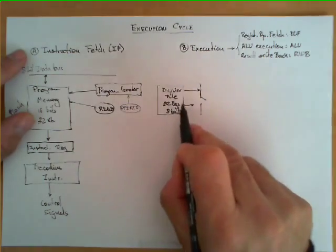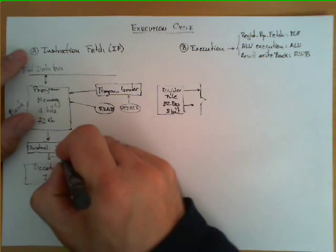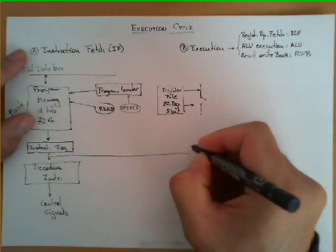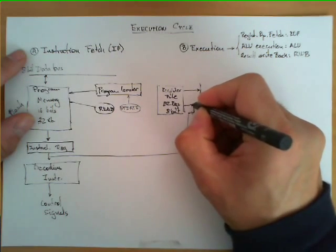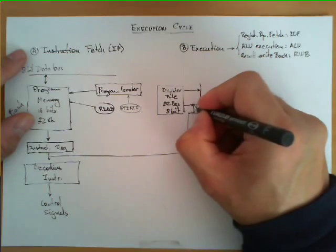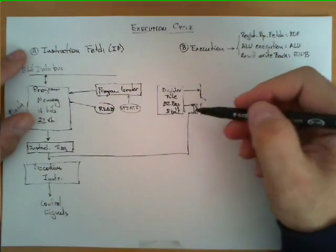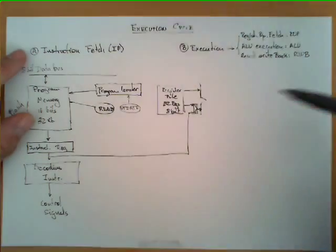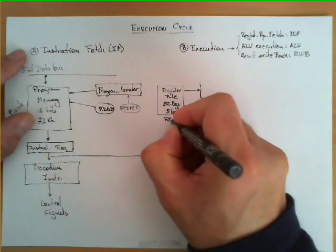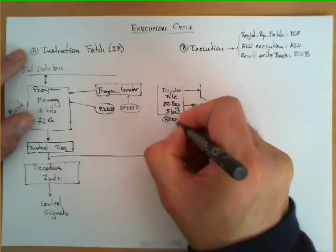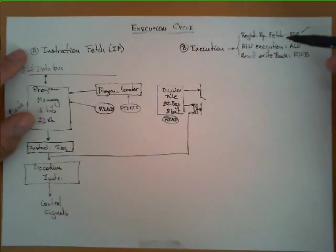The operands might come from the register file, or one of them from the register file while the other is taken from the instruction register. This is the case for instructions in which one of the operands is part of the instruction itself. A multiplexer allows us to select the operand to either come from the register file or the instruction register. So what we do here is a read operation on the register file.